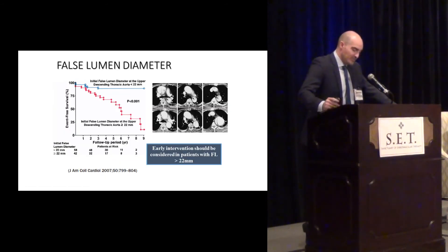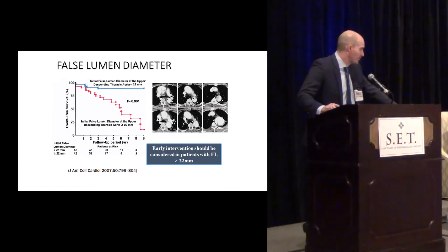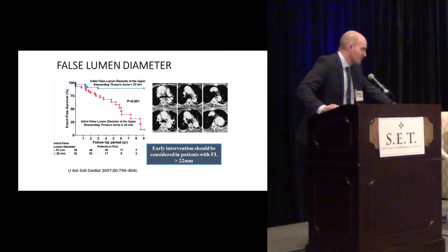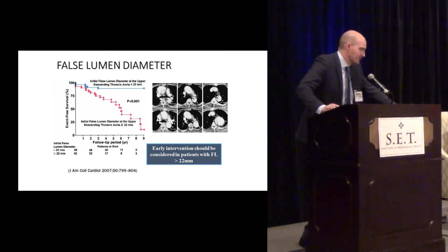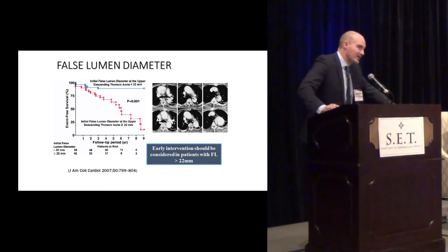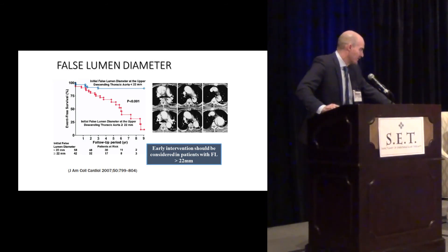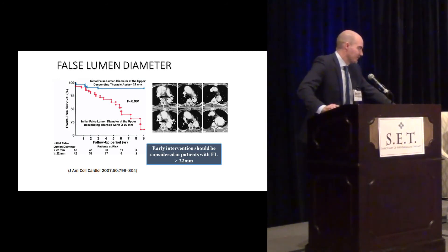The false lumen diameter has also been found to be of some importance. Patients with false lumen diameter greater than 22 millimeters don't have event-free survival — it tends to dilate — and as we said, leads to complications related to aortic disease.